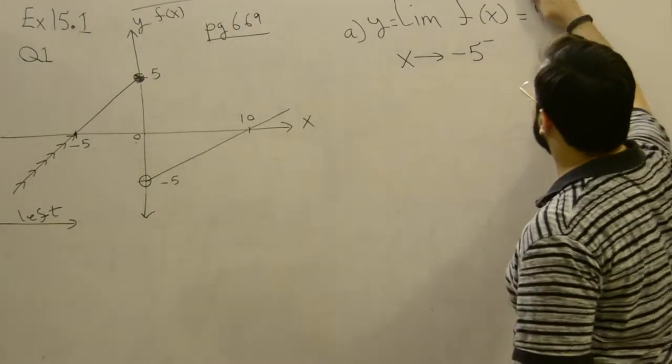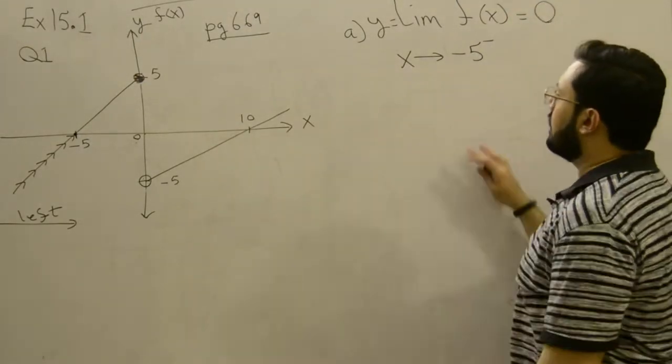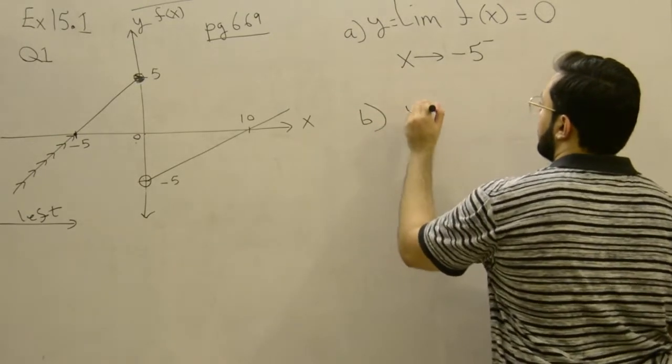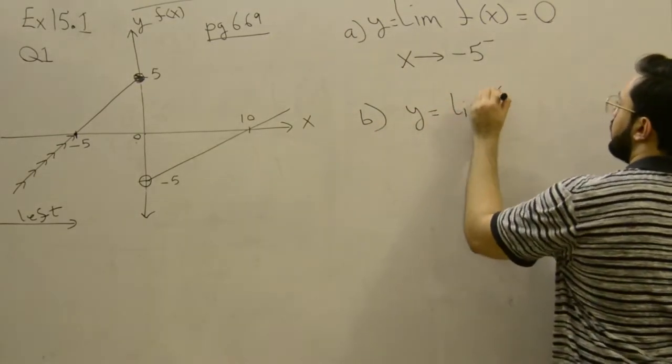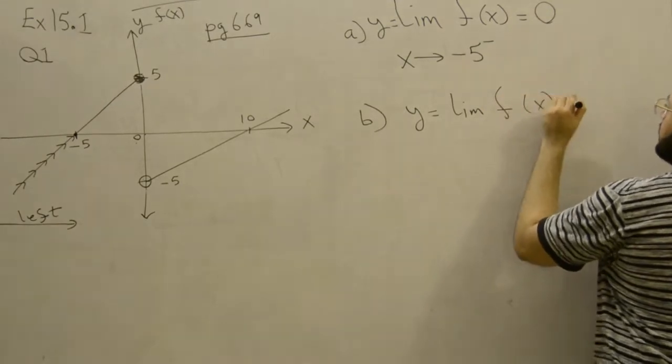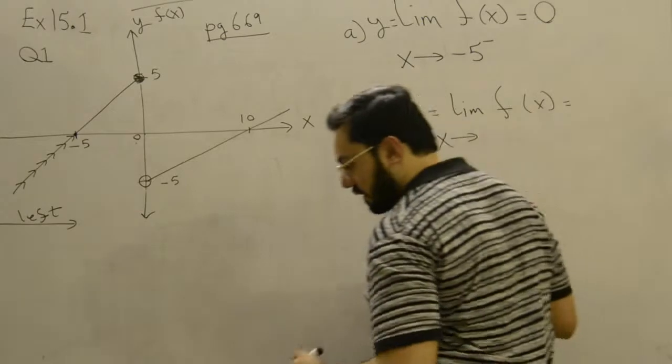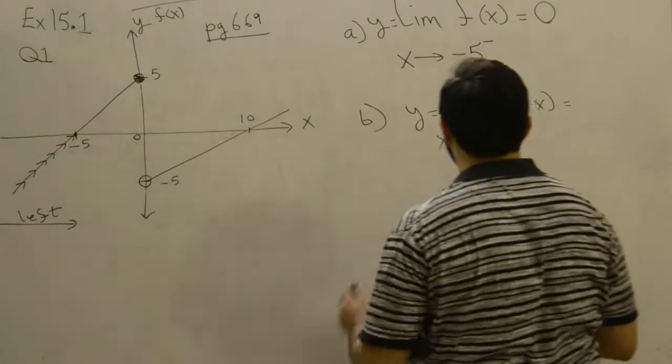Let's solve part b. Part b is also—they're asking us to find out the limit where x is approaching minus 5 from the right side.